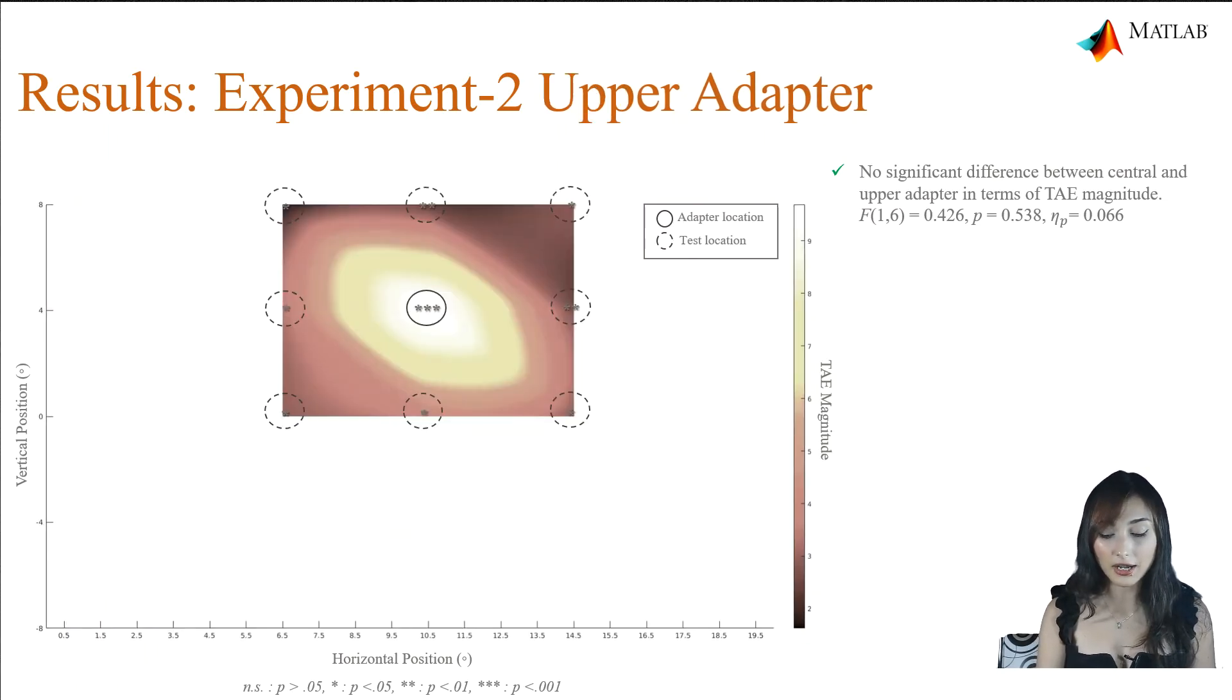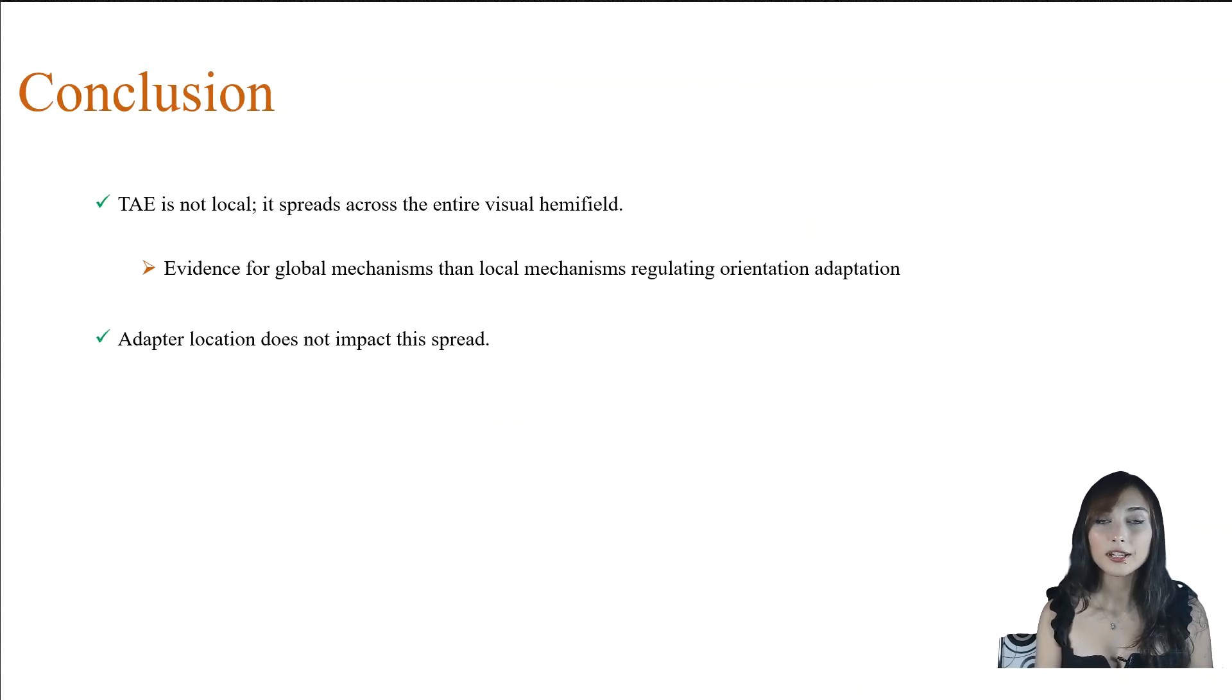Indeed, our statistical analysis confirmed that we didn't find any significant difference between central and upper adapter in terms of tilt-after-effect magnitude. To conclude, tilt-after-effect is not local. Instead, it spreads across the entire visual hemifield. This provides supporting evidence for global mechanisms than local mechanisms that regulate the orientation adaptation. Also, adapter location does not impact how tilt-after-effect spreads.